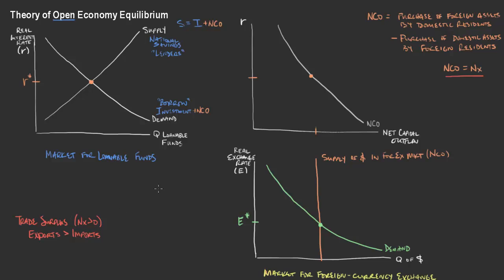How does this connect to net capital outflows? When exports are greater than imports, we are sending our goods overseas. Take the example of the Ford Motor Company selling a Ford Escape in China. They sell that Ford Escape in China and, in mass, we're doing more of this overseas. What do they get? They get some amount of Chinese currency in exchange for that Ford Escape. So now the Ford Motor Company is just holding on to a bunch of Chinese currency, and that's really what we're balancing here in net capital outflows.